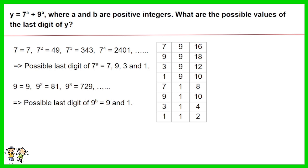Add up the possible last digits for 7 to the power of a and 9 to the power of b as shown on the table. Thus the possible last digits of y are 6, 8, 2, 0, and 4.